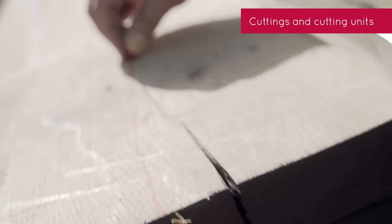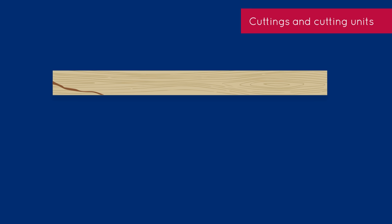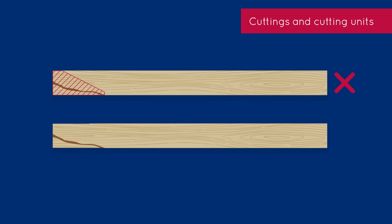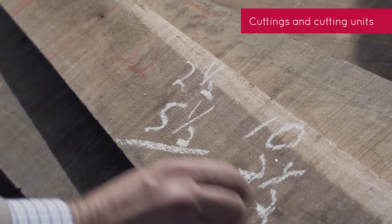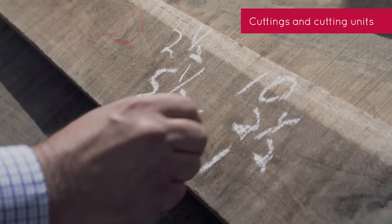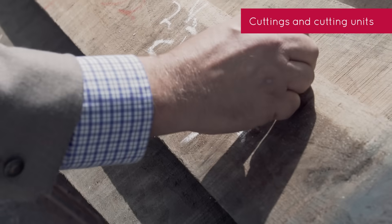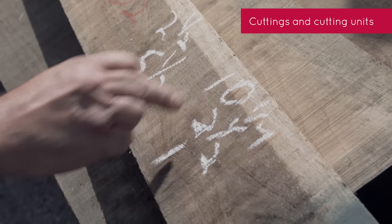Back to those cuttings — they have to be parallel to the edge of the board. We don't take diagonal cuttings; that would take a lot of geometry, and even if the end user could utilize that, we go parallel along the edge. We can rip or cross cut, always at 90 degrees. When we multiply inches in width times length in feet, it tells us how many 1-by-12-inch pieces are in those cuttings.